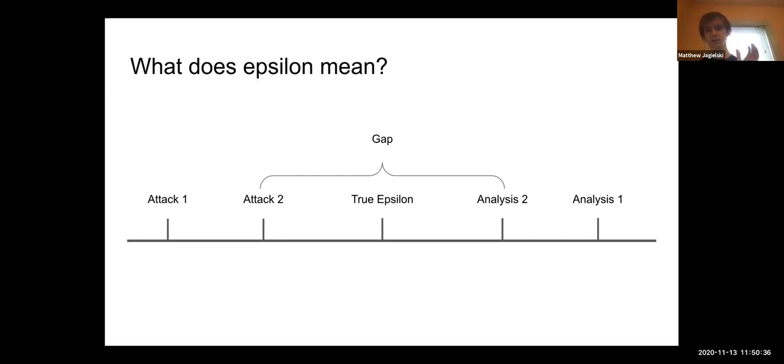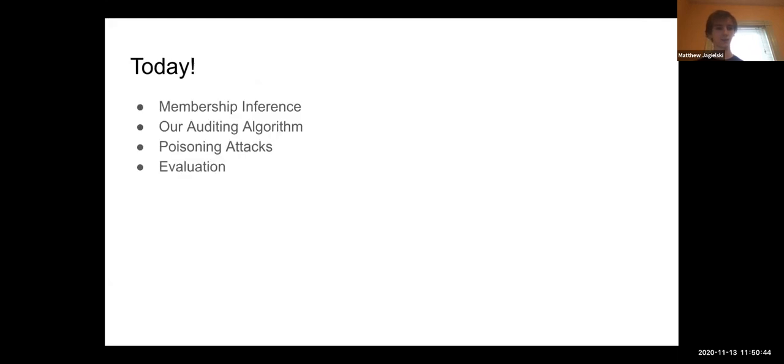The goal of our work is to decrease the size of this gap by providing a stronger attack than what exists. Today, I'm going to go through the existing attack called membership inference, our auditing algorithm that we use to provide these lower bounds, and then how we instantiate our auditing with poisoning attacks. Then I'll do a bit of discussion of evaluation.